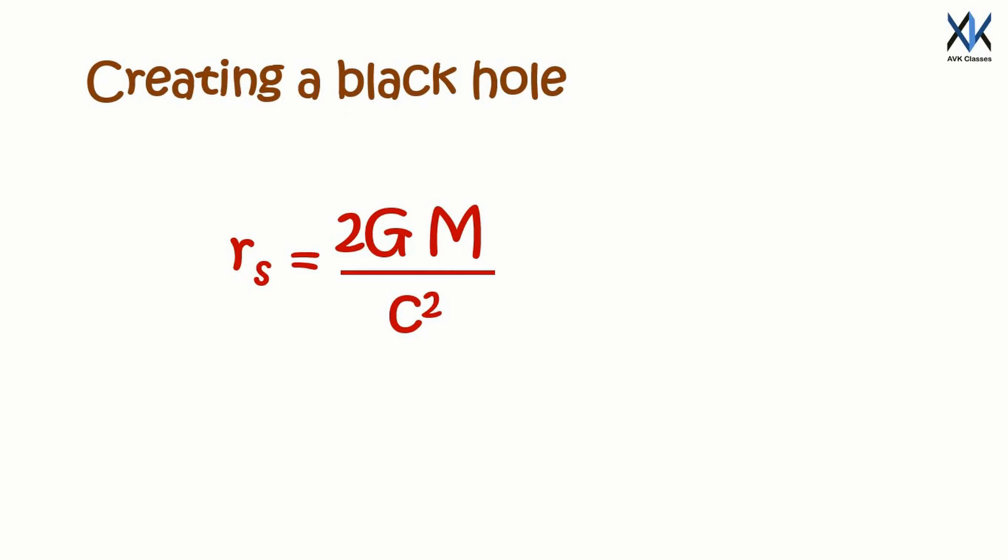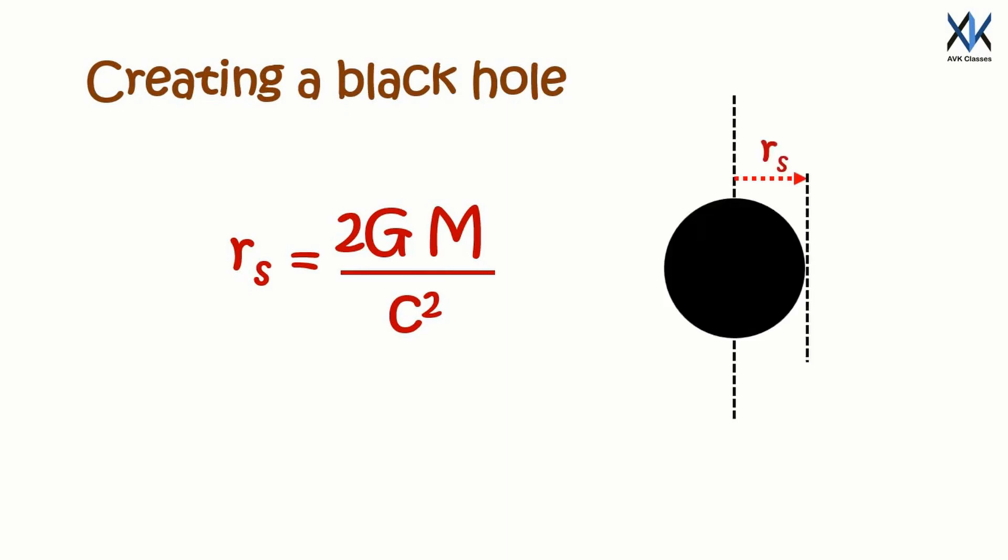This is the equation of Schwarzschild radius. As you know, Schwarzschild radius is the distance from the center of a black hole to a point below which nothing, not even light, can escape. This is also called the event horizon.